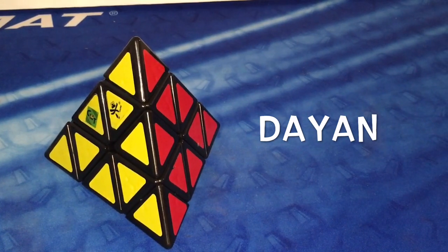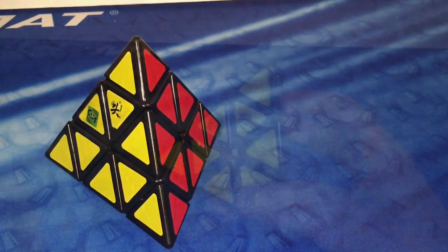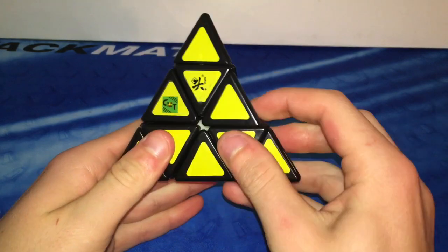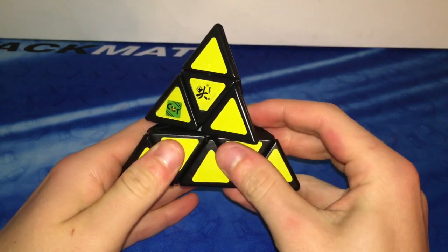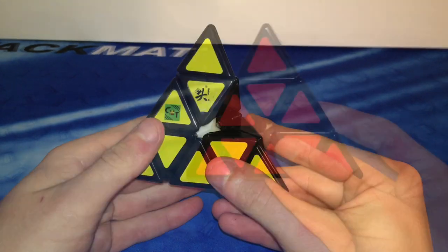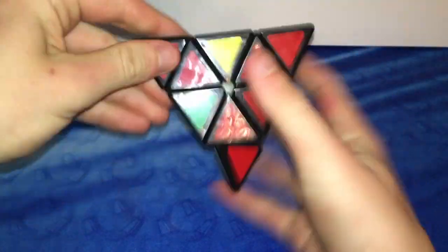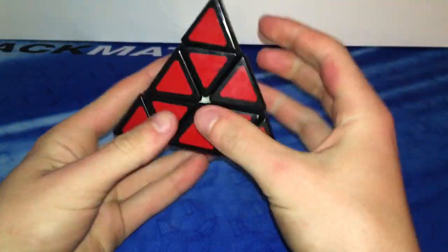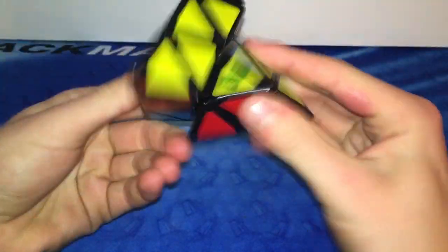But then the very hyped Dayan was released. And while this pyraminx was sort of a flop, it could do corner cutting except for one problem: it popped very easily. When the puzzle actually did turn correctly it was pretty nice and had a very nice feeling to it.